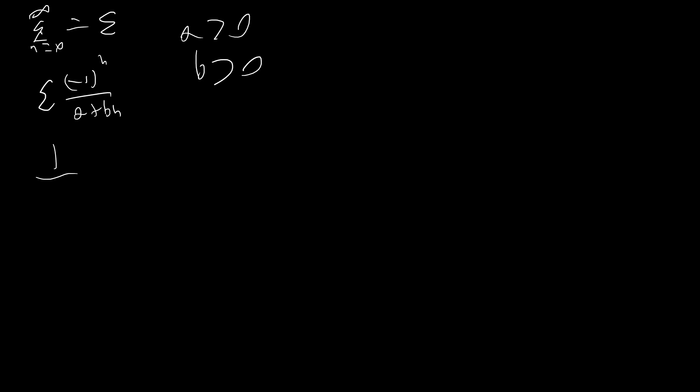And so the positive terms are going to be 1 over a plus 0, so just 1 over a, then plus 1 over a plus 2b, plus 1 over a plus 4b, etc. So the way this is gonna look is we can rewrite this in terms of k, or actually we can just write it as a sum of 1 over a plus 2bn.